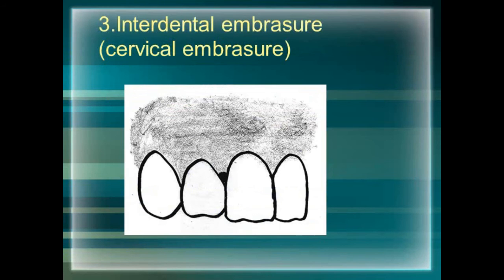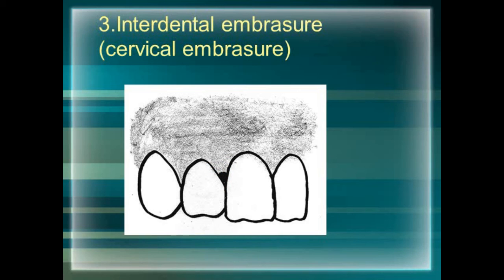The next soft tissue component is the interdental or cervical embrasure. The gingiva interdentally should be 5 mm above the intercrestal bone, and labially 3 mm above the alveolar crestal bone. This interdental embrasure should be filled with a pointed papilla reaching up to the embrasure end, thus eliminating the appearance of black triangles.